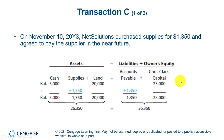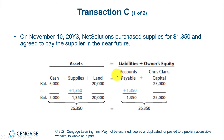The next thing he does is buy supplies. He agrees to pay the supplier in the near future. So assets go up — supplies is up $1,350 — and notice you now have a liability called accounts payable. That's a very common liability when you owe money and you're going to pay it relatively soon.